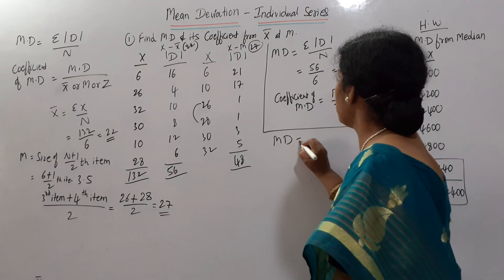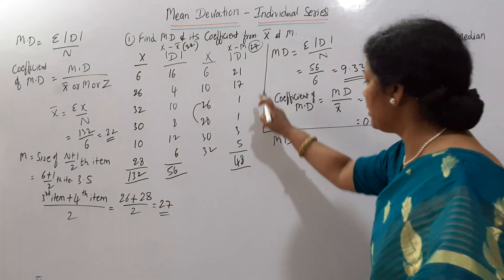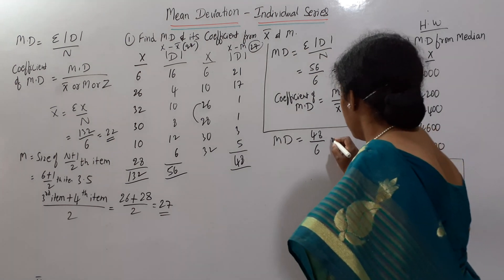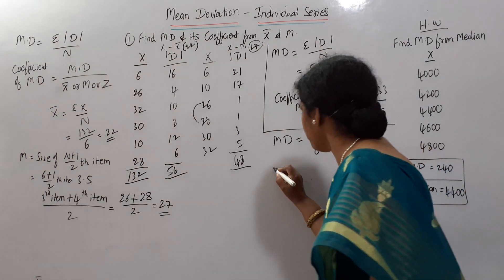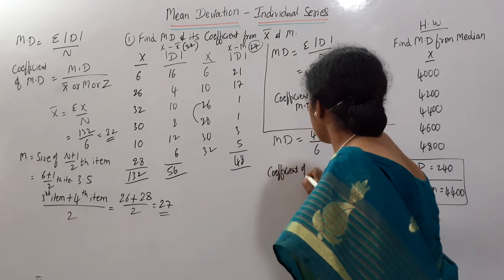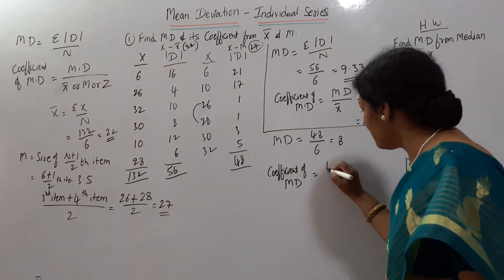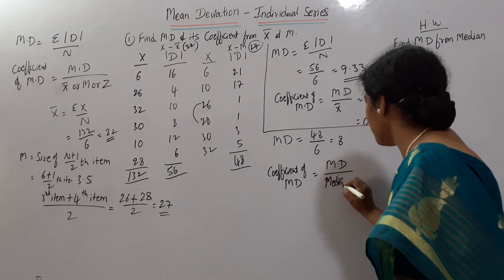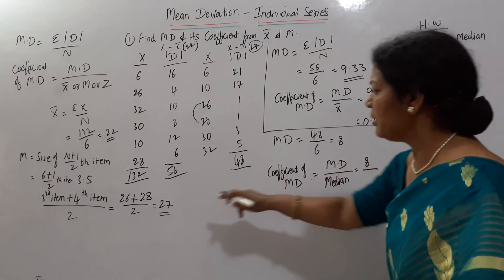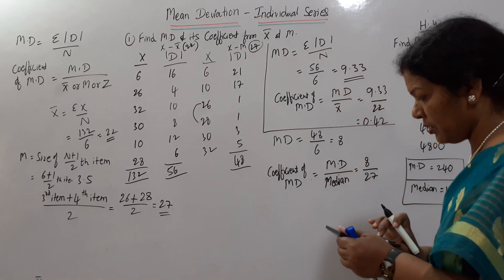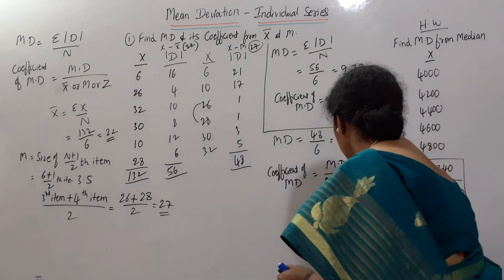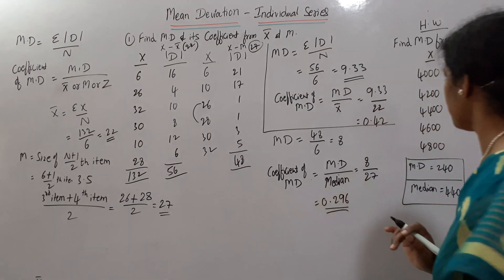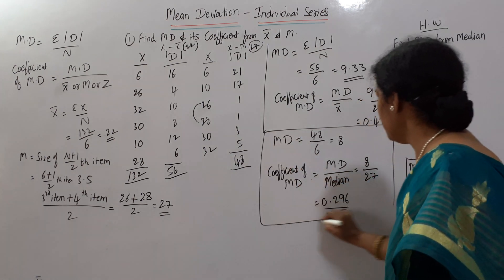Now let us apply the formula. Mean deviation = σ|D| by N = 48 divided by 6 = 8. So mean deviation from median is 8. For the coefficient of mean deviation: formula is MD divided by median, since we took deviations from median. So 8 divided by 27 = 0.296, which you can write as 0.30. That is the mean deviation from median.